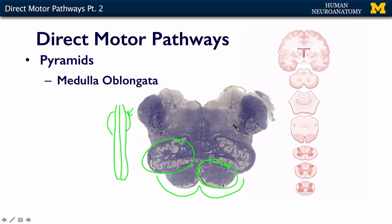But again, it's the same axon of this upper motor neuron that traveled through the internal capsule, through the midbrain in the crus cerebri, through the pons in a distributed fashion, and now comes together as the pyramid in the medulla.